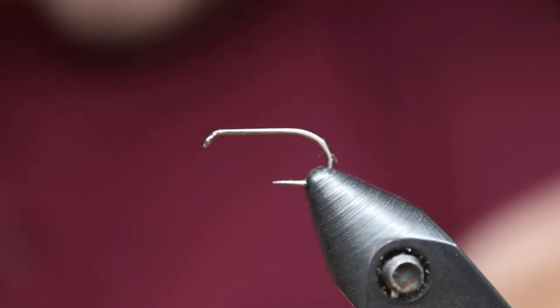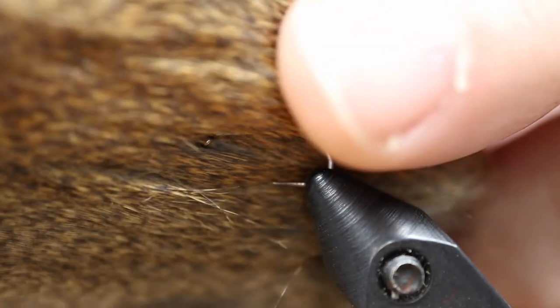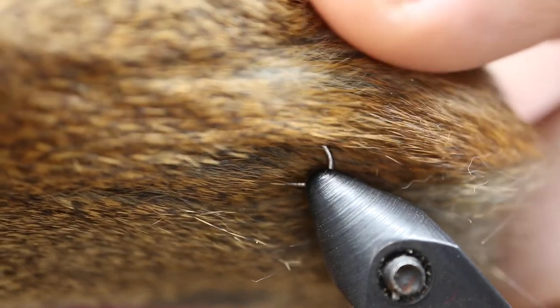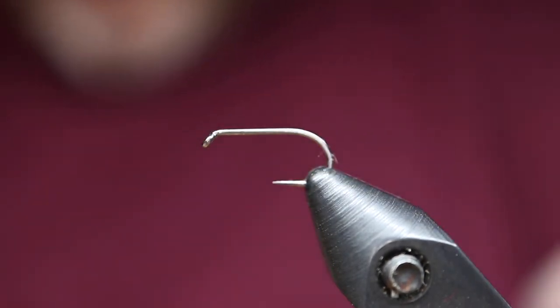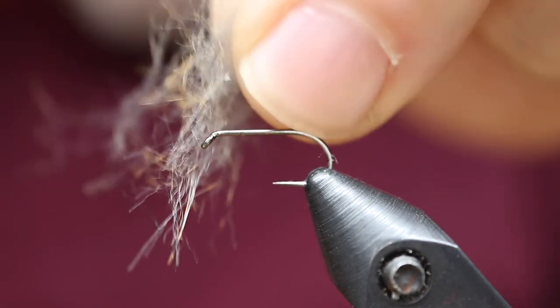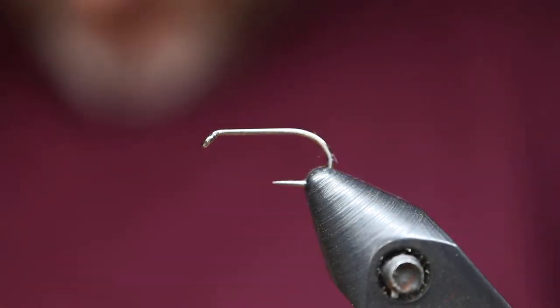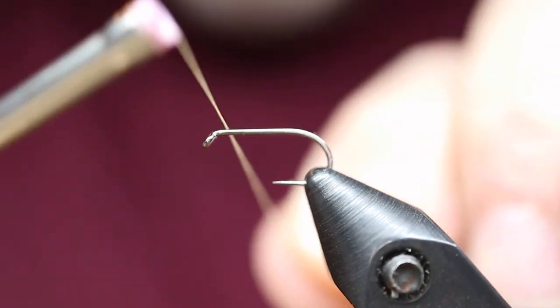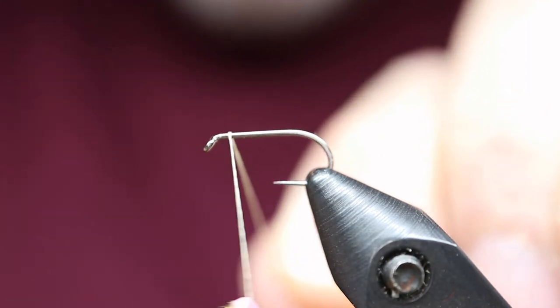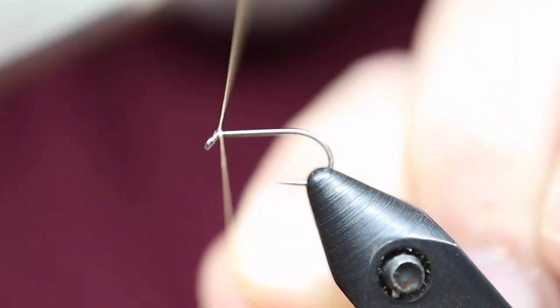I've already pulled it back from the tip there, and it calls for water rat. I don't have that, so I'm going to use some pine squirrel, and I actually use a piece of pine squirrel and a dubbing rake to get the dubbing off.